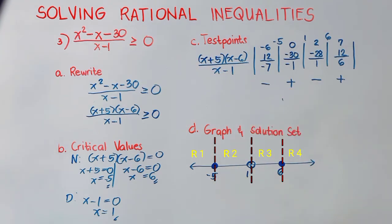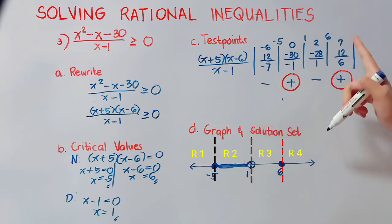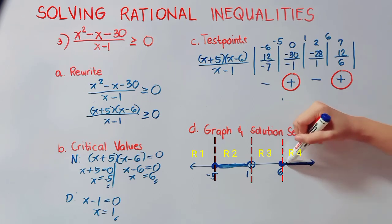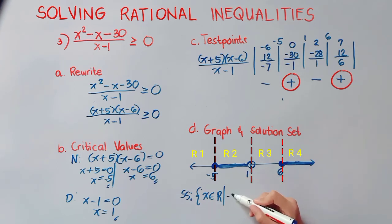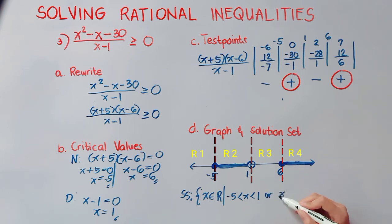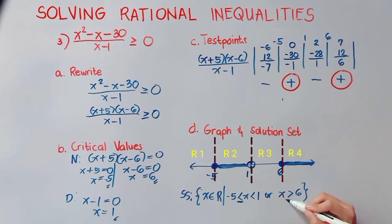Going back to our given, we are looking for greater than or equal to 0, so we are looking for positive values. Our solution is region 2 and region 4. Therefore, our solution set is x is an element of real numbers where x is in between negative 5 and 1, or x is greater than 6. Since negative 5 and 6 are shaded points, we place bars on those; there is no bar on the hollow point at 1. This is our final answer.